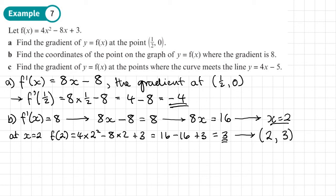And then lastly, part c says find the gradient of y equals f of x at the points where the curve meets the line y equals 4x minus 5. So the first thing we need to do is to find the coordinates where f of x meets this line. We need to solve these simultaneously, find the x coordinate. And then once we've got the x coordinate, we can put it into f dash of x, the derivative function, to find out what the gradients are at that point. So let's start by solving 4x squared minus 8x plus 3 and 4x minus 5 simultaneously. So we'll start by taking away 4x from both sides. So they're 4x squared minus 12x and adding 5 to both sides plus 8 equals 0. We'll divide everything here by 4.